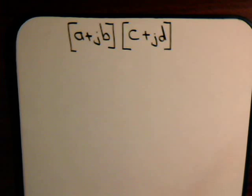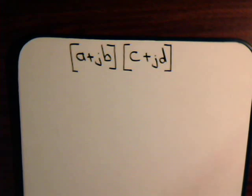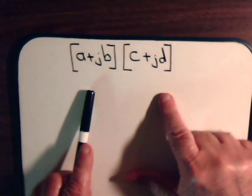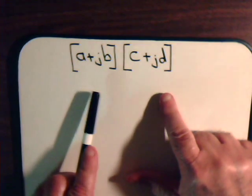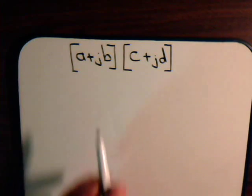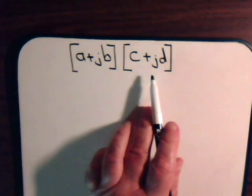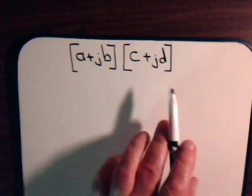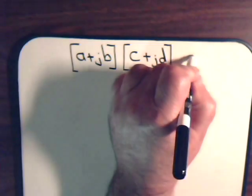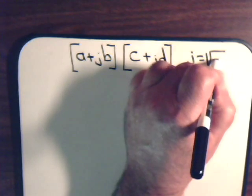We're going to review how to multiply two complex numbers. The rules are not any different than when you're multiplying two binomials together. So, multiplying a plus jb times c plus jd — where j is the square root of negative one.